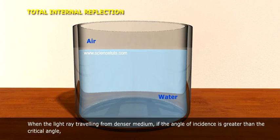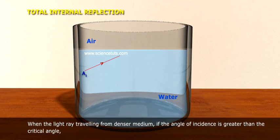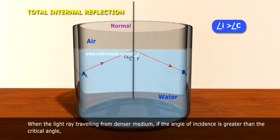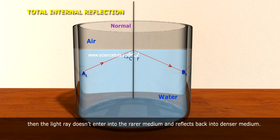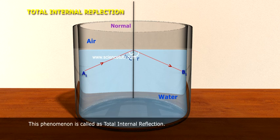Total internal reflection: when the light ray travels from a denser medium and the angle of incidence is greater than the critical angle, then the light ray does not enter into the rarer medium and reflects back into the denser medium.